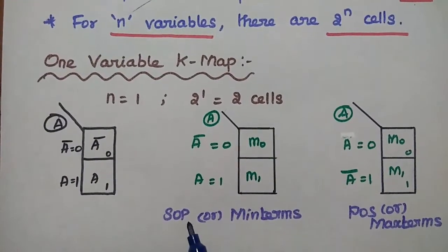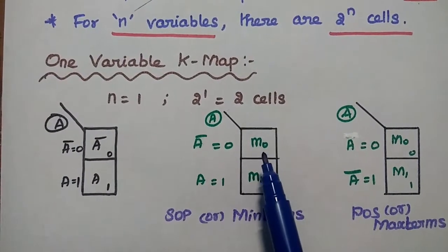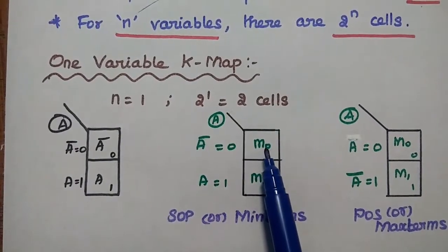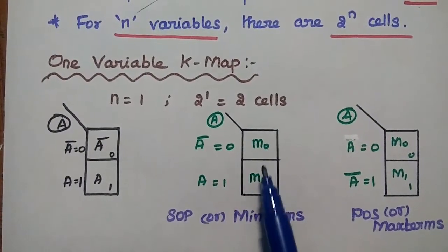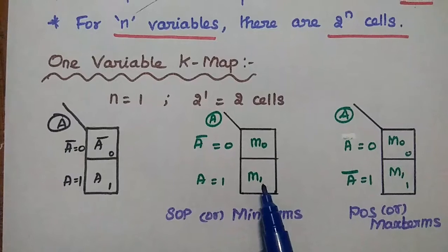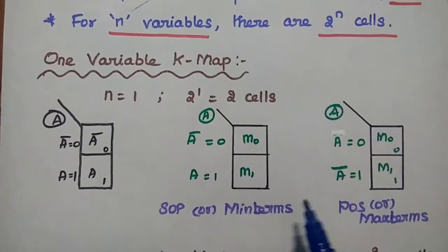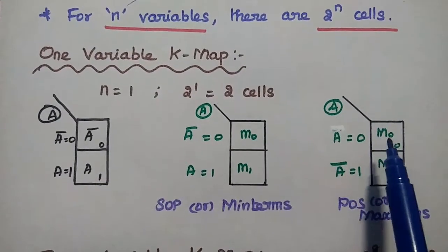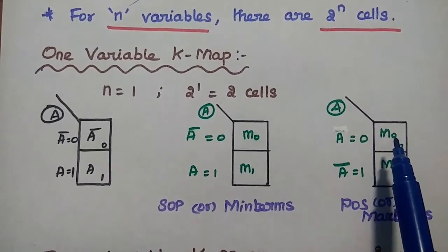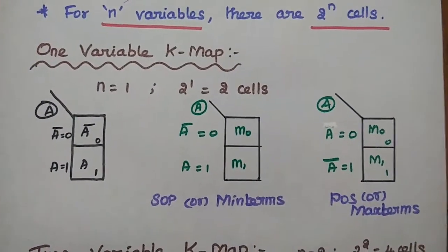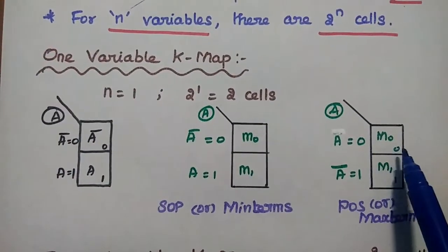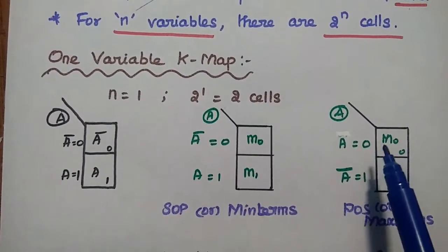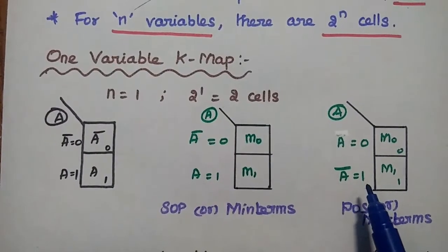In terms of sum of products or minterms, we can represent the cells as m0 and m1. In case of product of sums or maxterms, we can represent the cells as capital M0 and M1. In maxterms, we represent A equals 0 as A-bar equals 1.